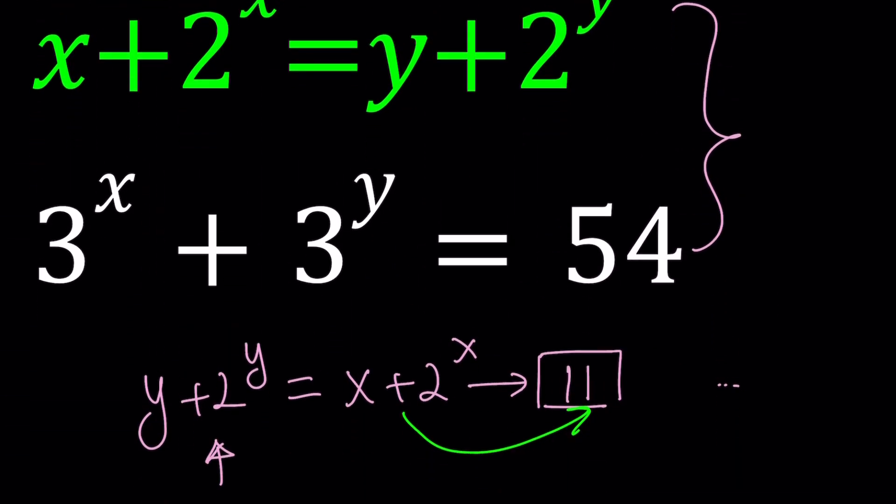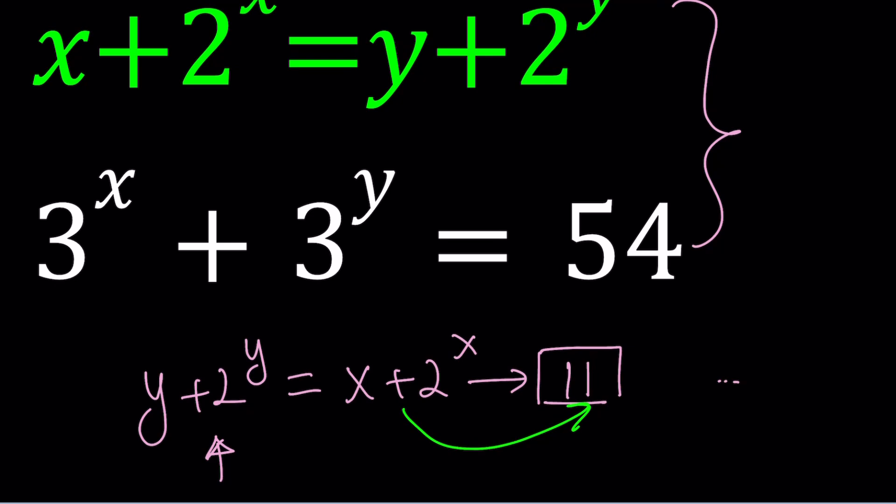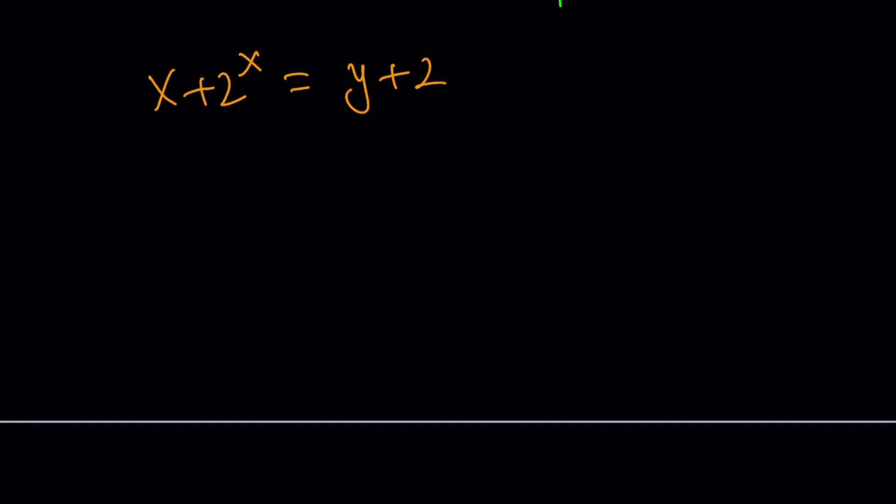But how do we put that into the second one? If x equals 3, that seems to be working. Where does it come from? Let's talk about the details. I have this equation: x + 2^x = y + 2^y. That's interesting because I have the same thing with different variables. So let's define the following function: f(t) = t + 2^t.